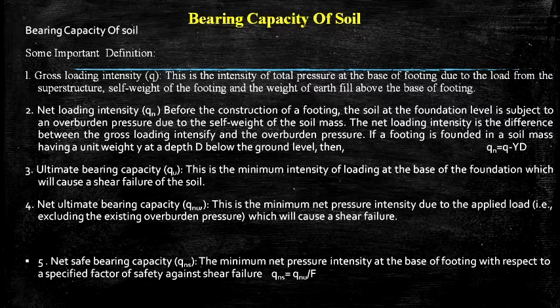The next definition is ultimate bearing capacity. This is the minimum intensity of loading at the base of the foundation which will cause a shear failure of the soil. Next, net ultimate bearing capacity is the minimum net pressure intensity due to applied load, excluding the existing overburden pressure, which will cause a shear failure. Next is net safe bearing capacity or Qns: the minimum net pressure intensity at the base of footing with respect to a specified factor of safety against shear failure. The formula is Qns equal to QnF divided by F, where QnF means net ultimate bearing capacity and F is factor of safety.